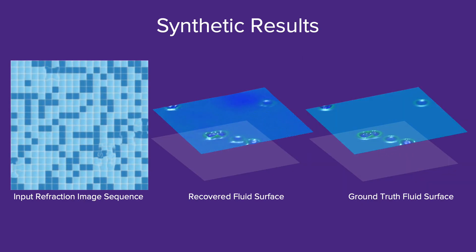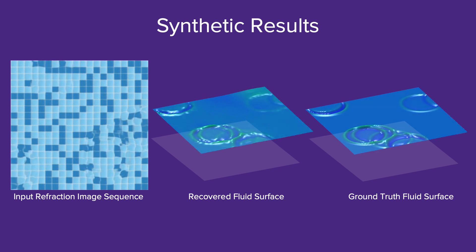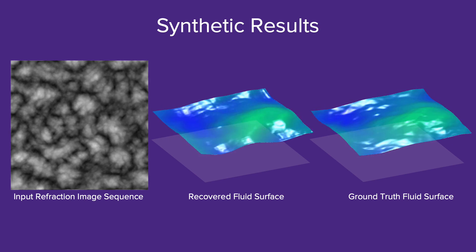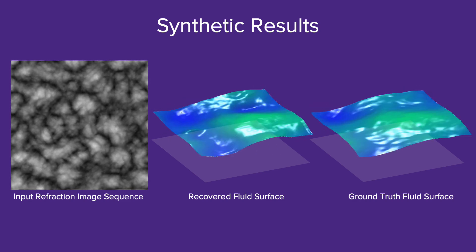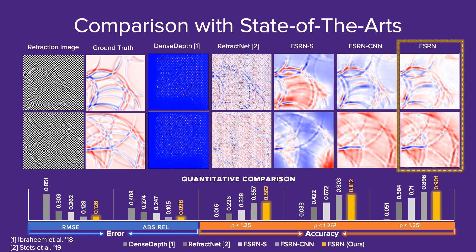This result shows a shallow water wave. We compare the recovered surfaces with the ground-truth ones. Here is another result on deep water waves. We compare our network with state-of-the-art depth prediction networks, and we can see that our network achieves the best performance. Without the physics-based refraction loss and temporal consistency constraints, other depth prediction networks do not work well on fluid scenes.